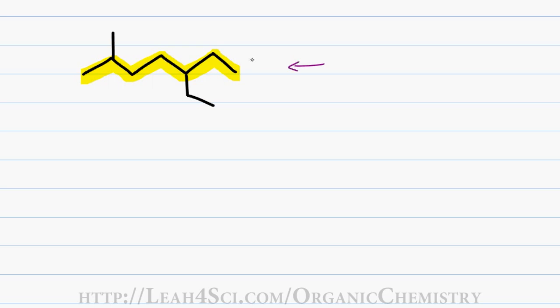This means if I start from the right, I get 1,2,3 for my first group or if I start from the left, I get 1,2. Since 2 is lower than 3, I start counting from the left for a total of 7, giving me a first name of hept. Since I have only single bonds, I have ane and that's my parent name.